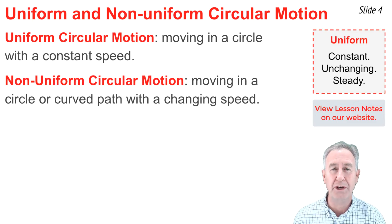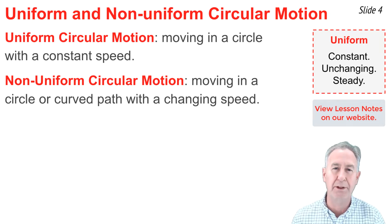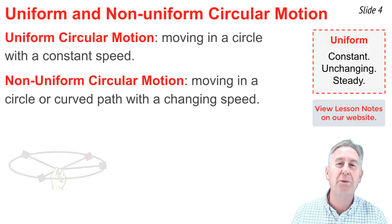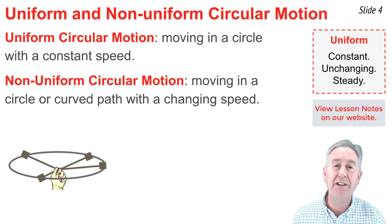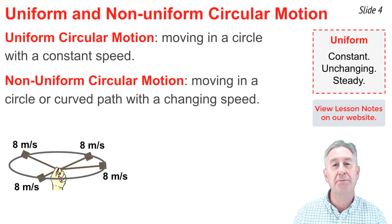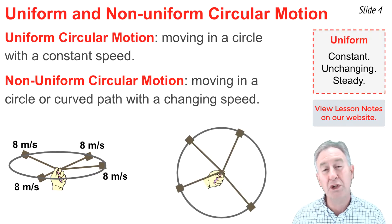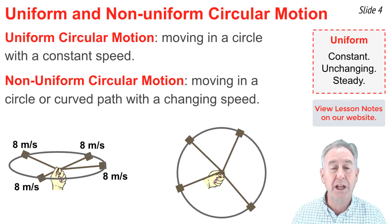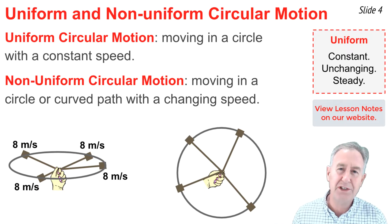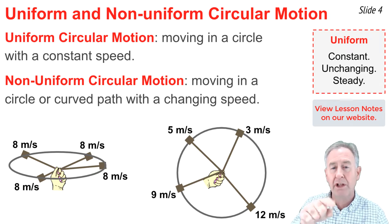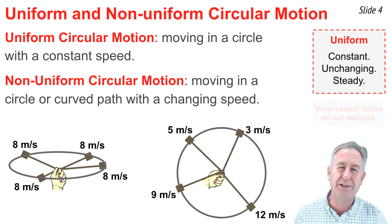In non-uniform circular motion, an object moves in a circle or along a curved path with a changing speed. A classic example of uniform circular motion occurs if you take a lab stopper, tie a string to it, and whirl it in a horizontal circle — the speed at every point along the perimeter would likely be the same. We'd have non-uniform circular motion if we whirled it in a vertical circle, where the speed tends to be greater at the bottom than at the top due to gravity's influence.